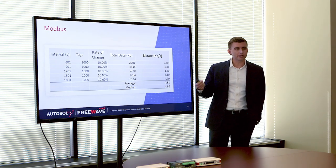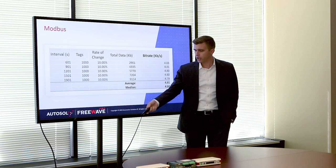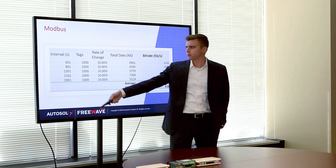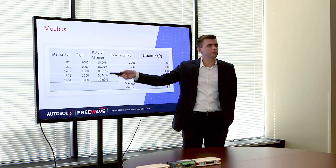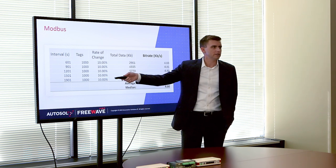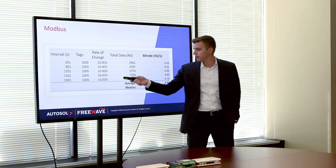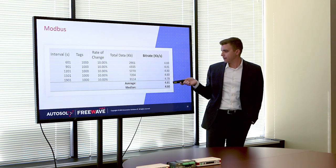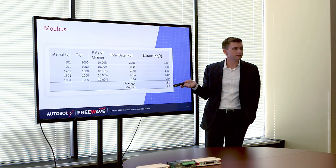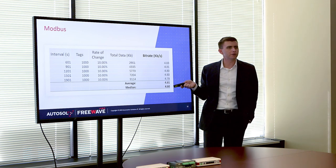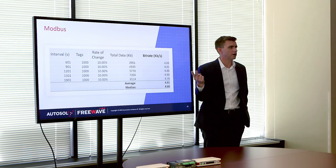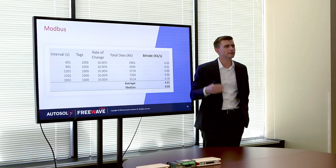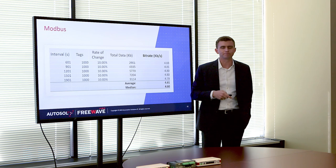In another test with Modbus, we changed the time interval from 10 minutes to 30 minutes, leaving the rate of change at 10% to hammer home the point — again 4.81 and 4.8 kilobits per second. There's not a lot of deviation in how much bandwidth was consumed, no matter how long we polled or what the rate of change was, because in poll-response we send everything that's requested no matter what.